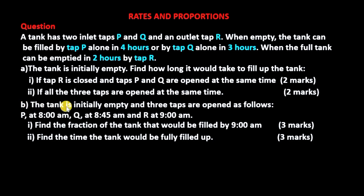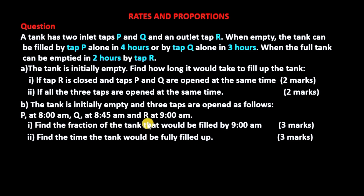Part B: the tank is initially empty and the three taps are opened as follows — P at 8 a.m., Q at 8:45 a.m., and R at 9 a.m. Roman 1: find the fraction of the tank that would be filled by 9 a.m. Roman 2: find the time the tank would be fully filled up.